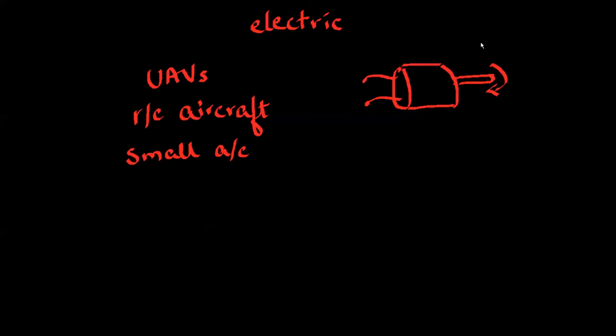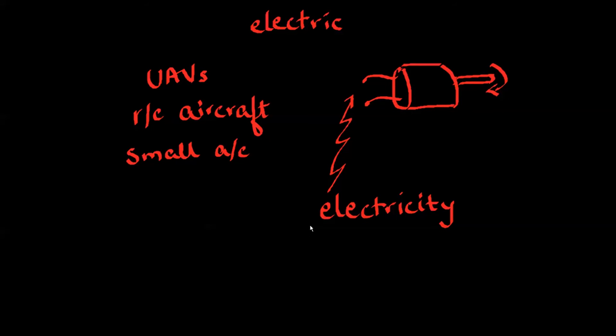All right. Lastly, we come to electrics. These are only used today in UAVs, RC aircraft, radio-controlled aircraft, or small aircraft. Why? Because they don't produce enough power. The basic principle is the same, though. You want the shaft to rotate so you can rotate a fan or a prop or another shaft. But the motor, the electric motor here, is powered by electricity. And where does this come from? Today, it only comes from batteries or solar panels. There are other means to generate this electricity, but today we cannot fit the whole package in an aircraft and make it small enough and efficient enough that the power is high enough to propel a large aircraft.